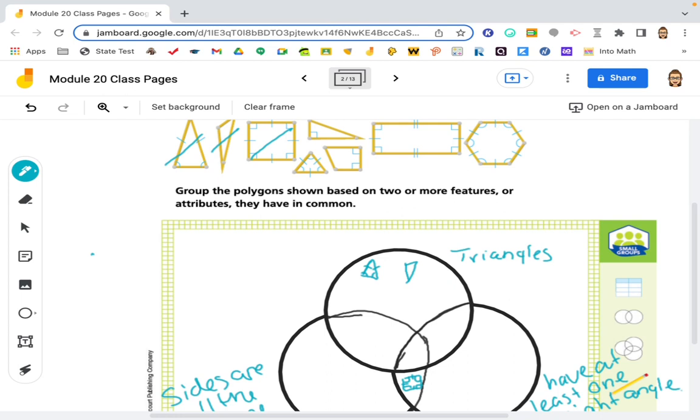And then we have a triangle with at least one right angle, but it does not have all the sides the same.